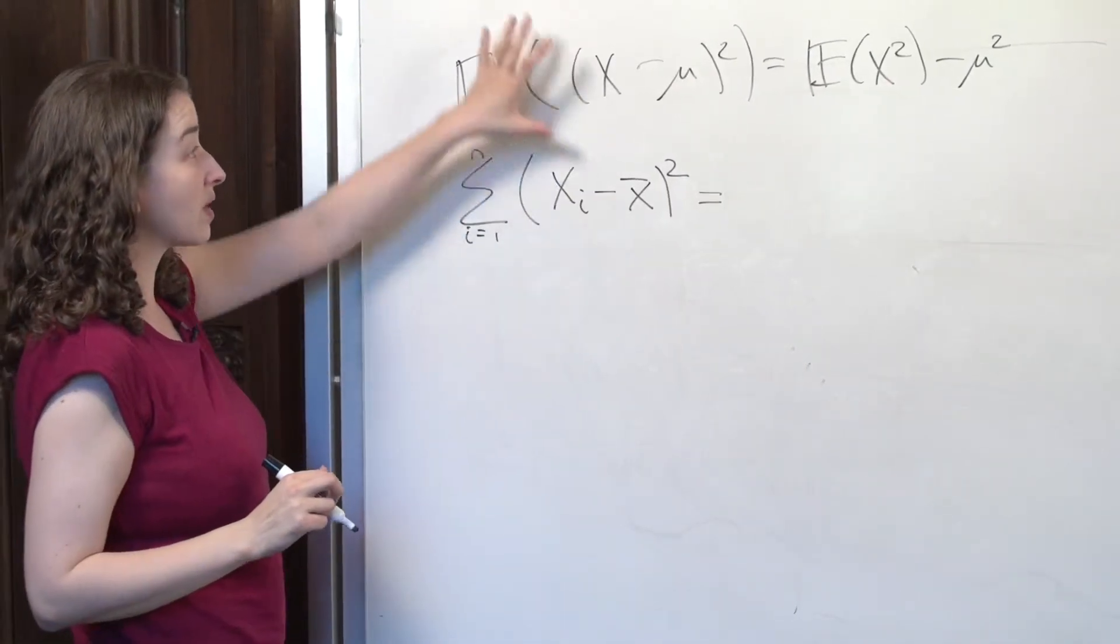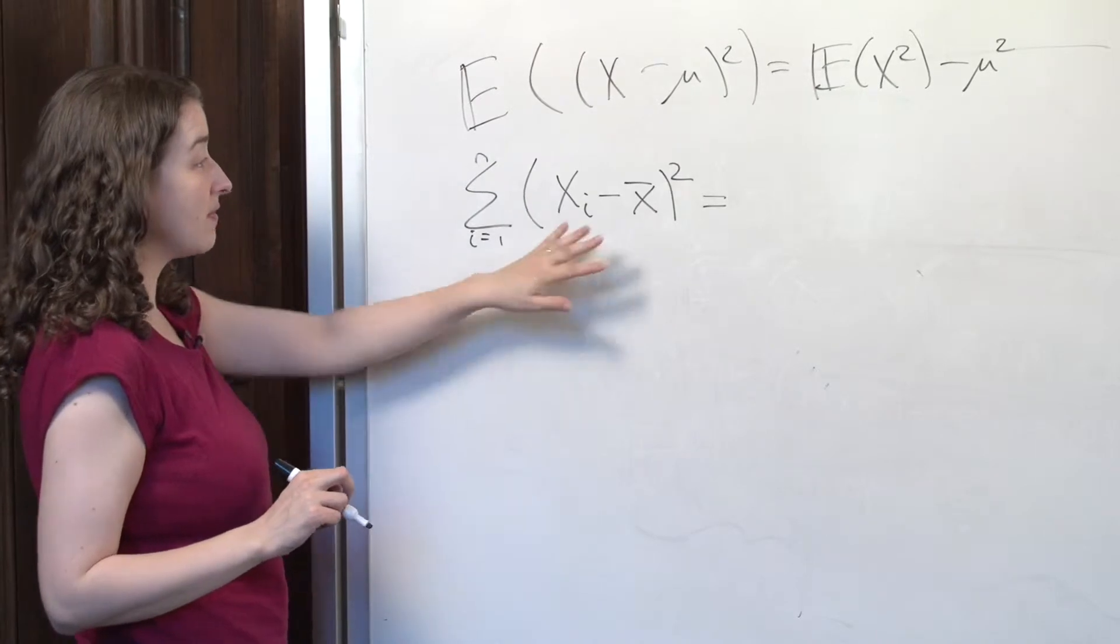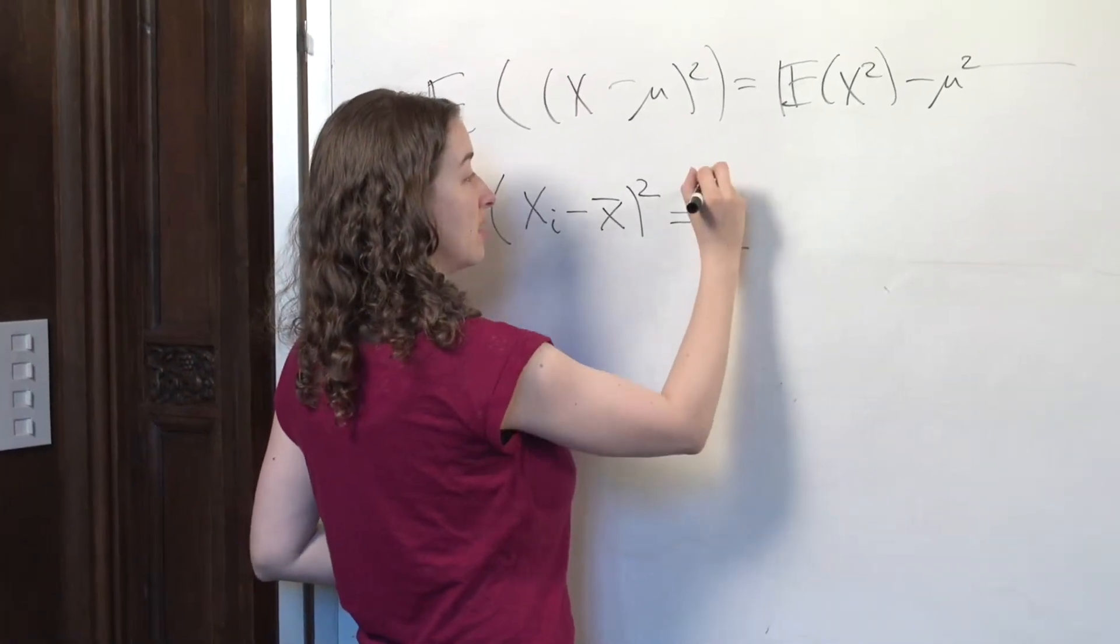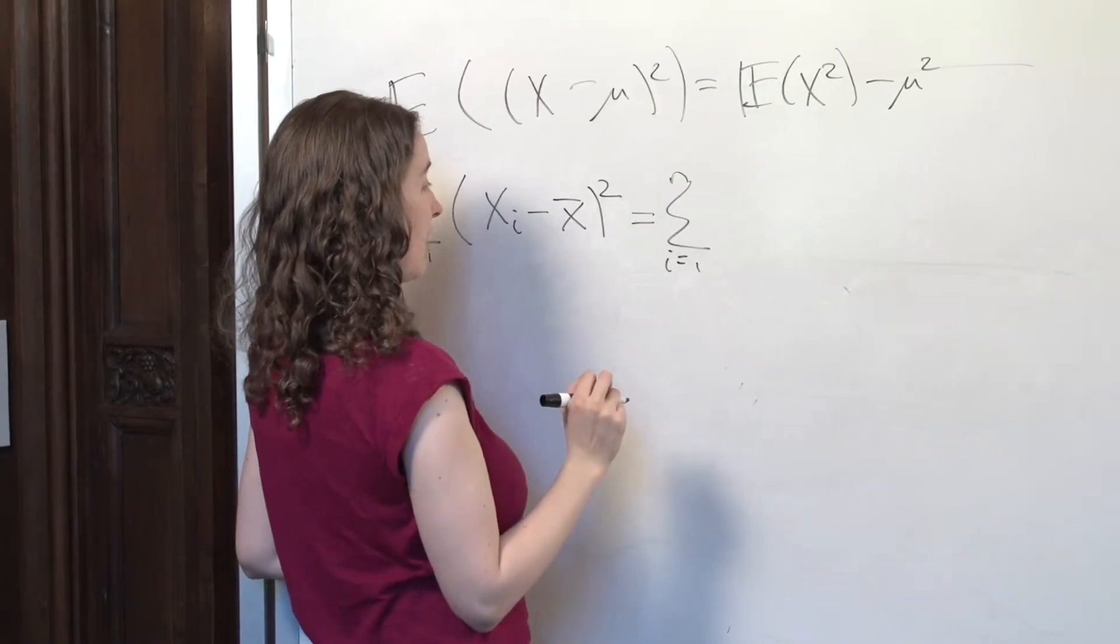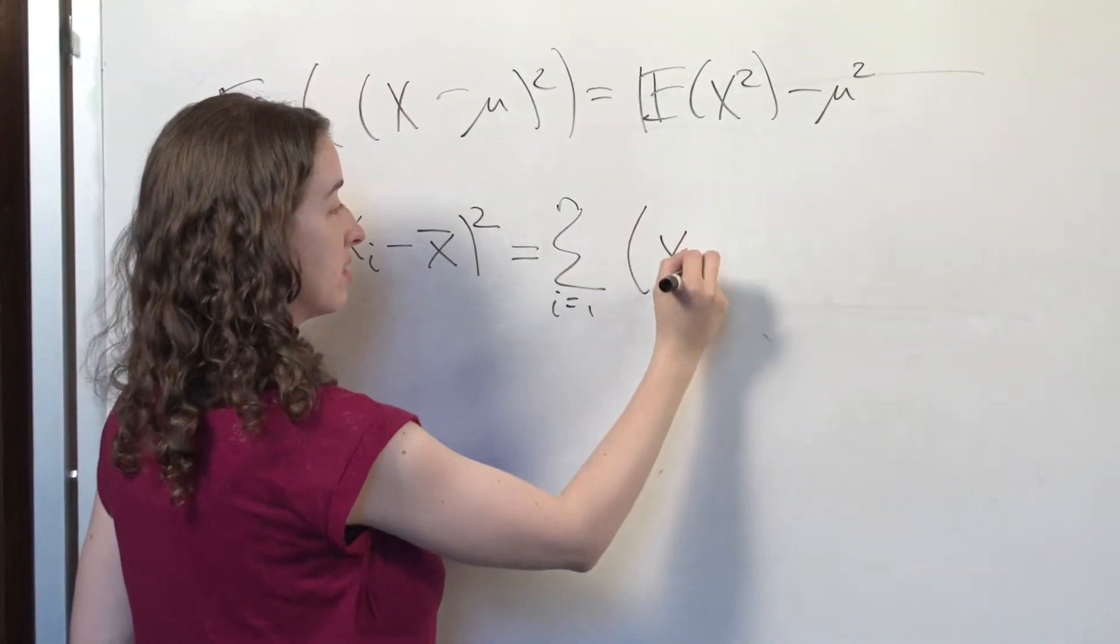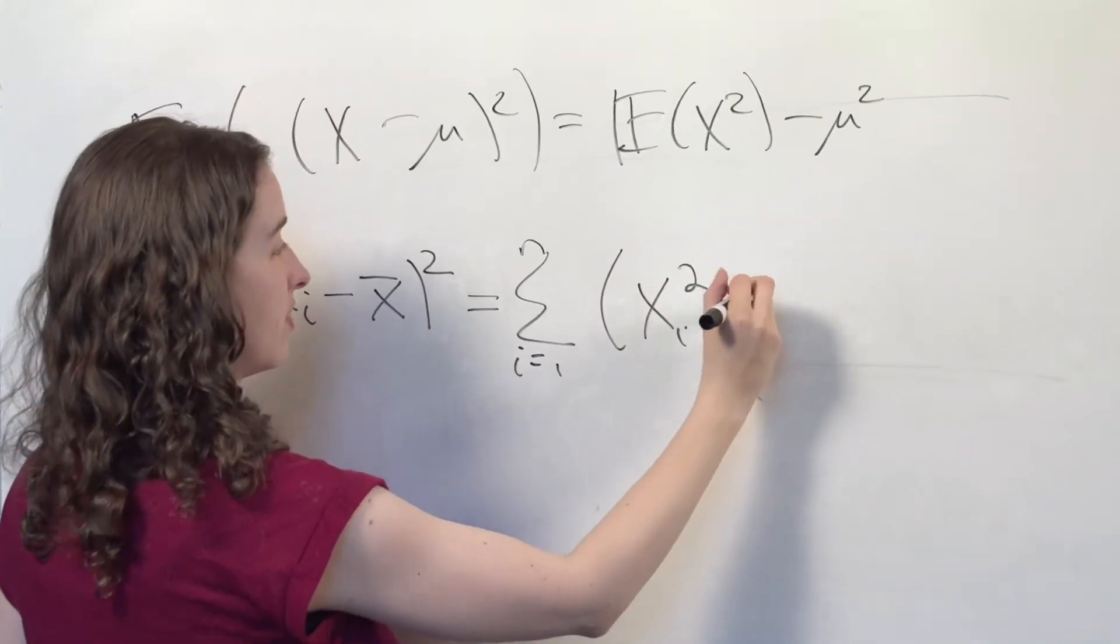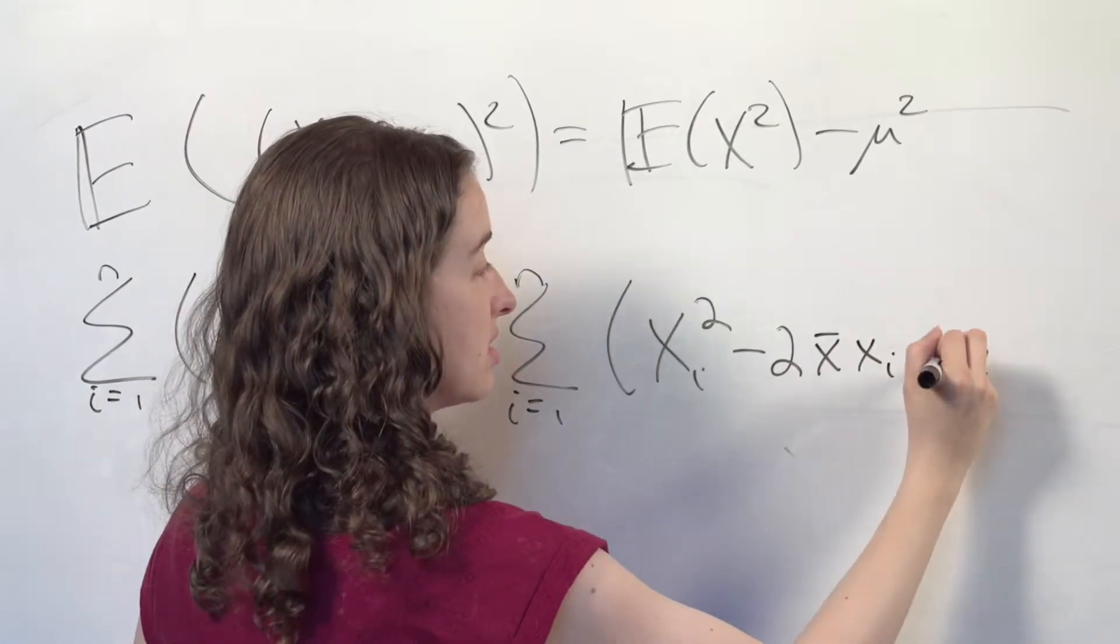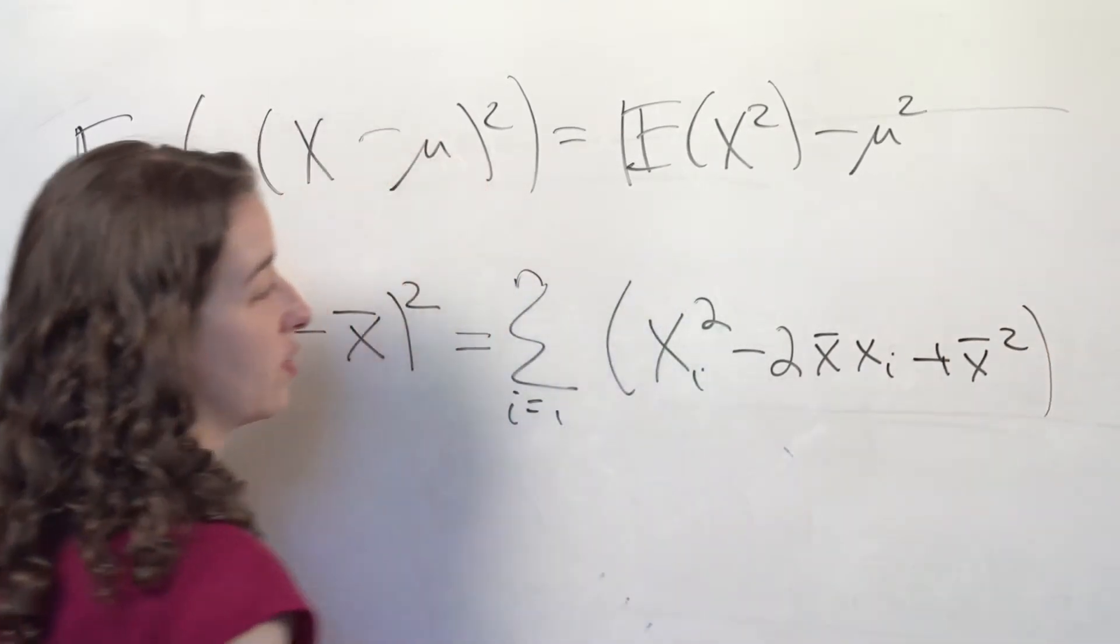So just like I did when I was doing this derivation above, I'm going to multiply out what's inside the summation sign. I've got the sum of i goes from 1 to n of xi squared minus 2x bar xi plus x bar squared.